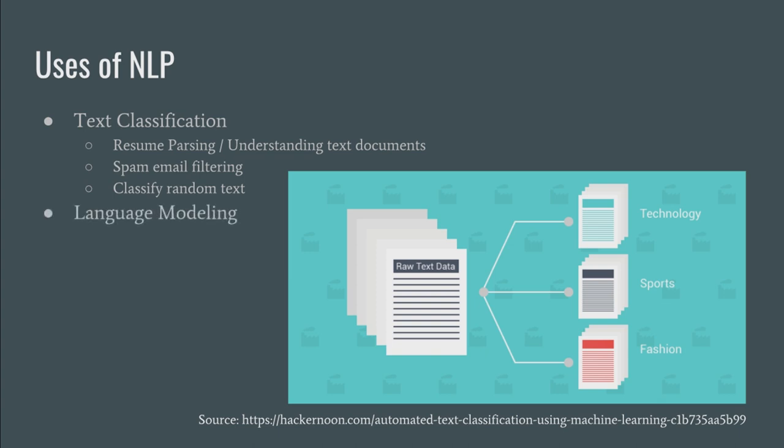Another area where NLP is used is called language modeling. Language modeling is a process of developing probabilistic models that are able to predict the next word of a sentence if the preceding words are given to you. A probabilistic model means that the model is built using probabilities of words and their occurrences in phrases, based on the text provided for the computer to learn. There is a huge text you give to the computer — it learns how the words are arranged, which words come next to which, and the computer gathers statistical insights and helps you predict the next word. Language modeling will be covered in depth in one of my future episodes.